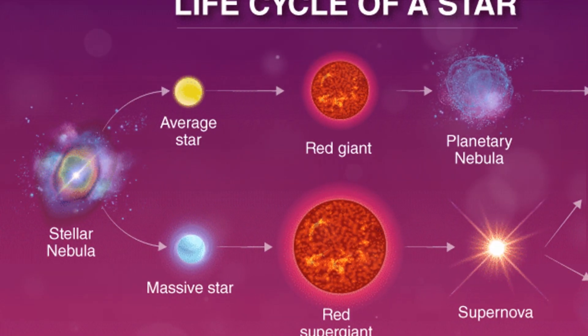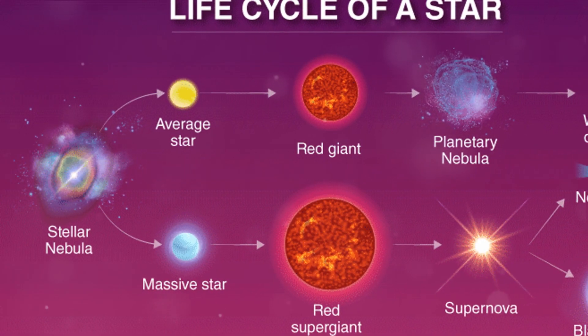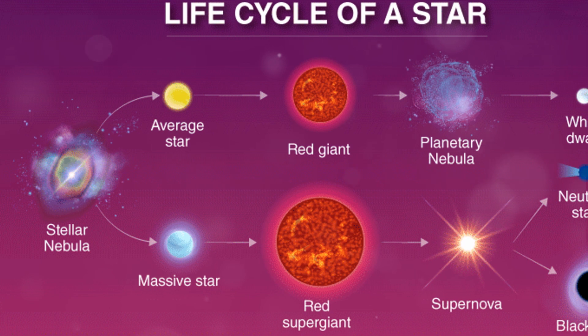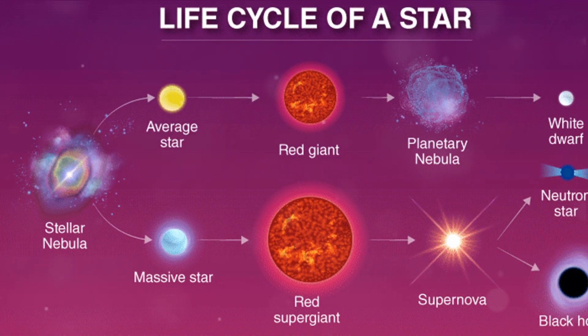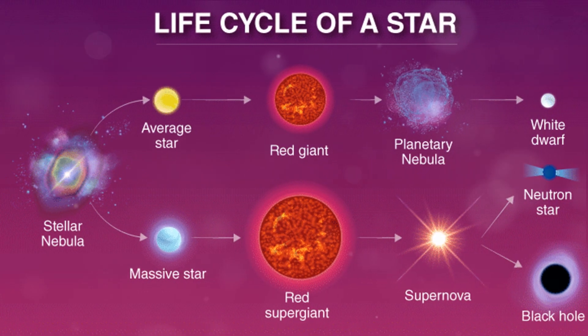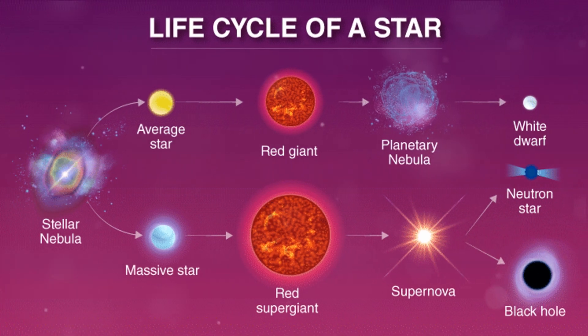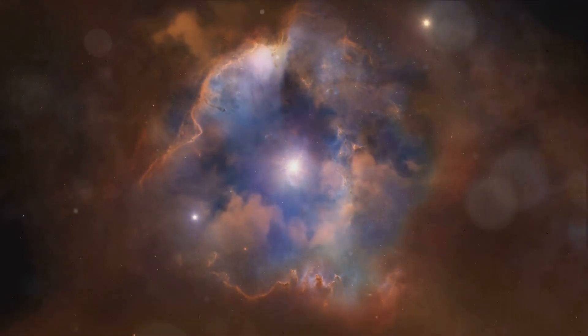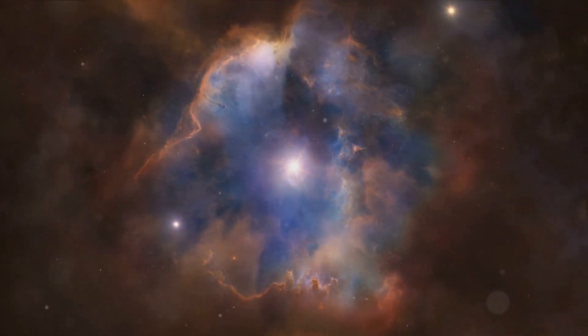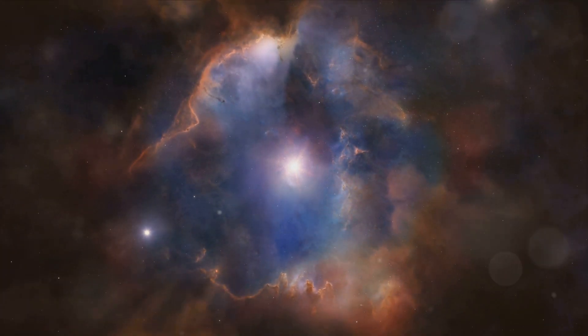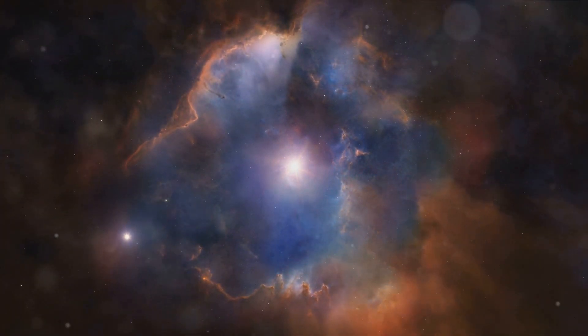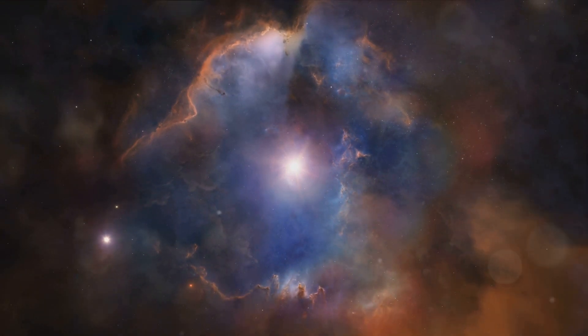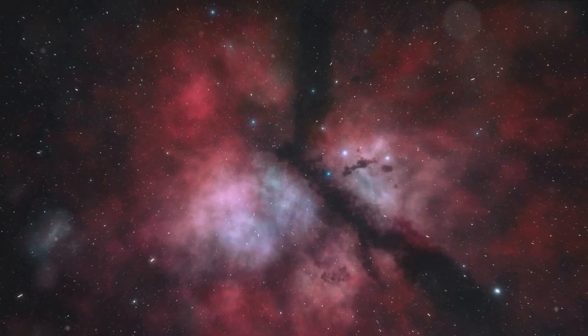To summarize, stars and galaxies are fundamental constituents of the universe. Stars are born from nebulae, and their life cycle includes stages like the main sequence, red giant, and white dwarf or neutron star. Galaxies, including our Milky Way, house countless stars and have their origins in the early universe. The life cycle of stars and the formation of galaxies are subjects of great wonder and ongoing research.